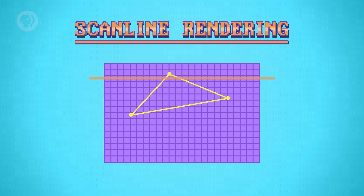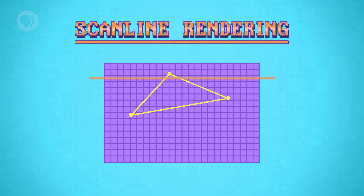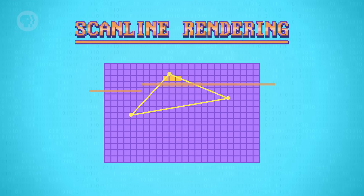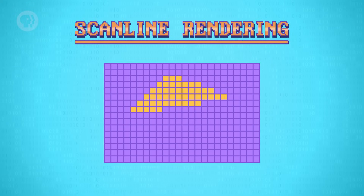Because polygons are triangles, if you intersect one line, you have to intersect with another – it's guaranteed. The job of the scanline algorithm is to fill in the pixels between the two intersections. On the first row we look at, we intersect here and here. The algorithm then colors in all the pixels between those two intersections. And this just continues row by row, which is why it's called scanline rendering. When we hit the bottom of the polygon, we're done. The rate at which a computer fills in polygons is called the fill rate.